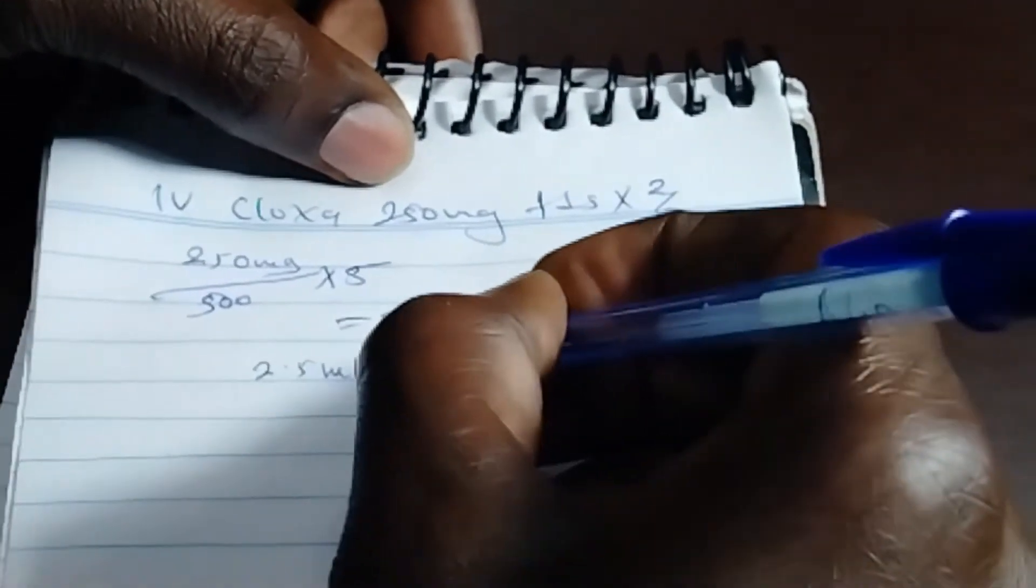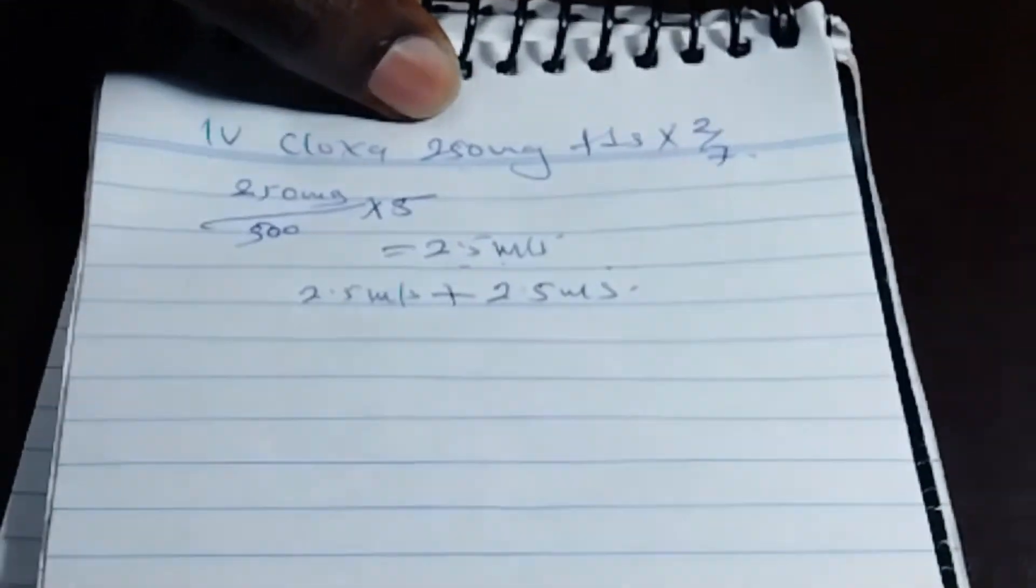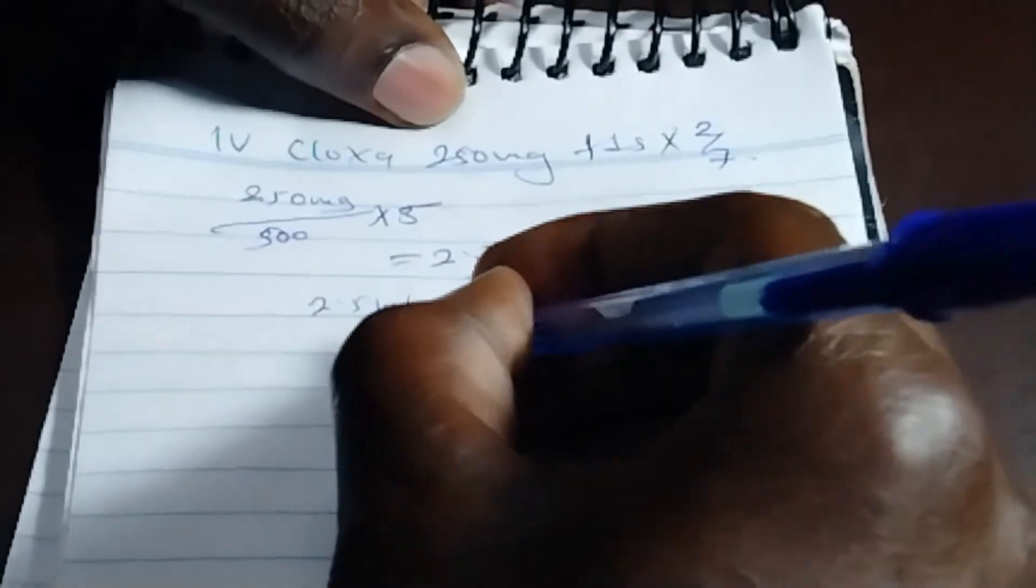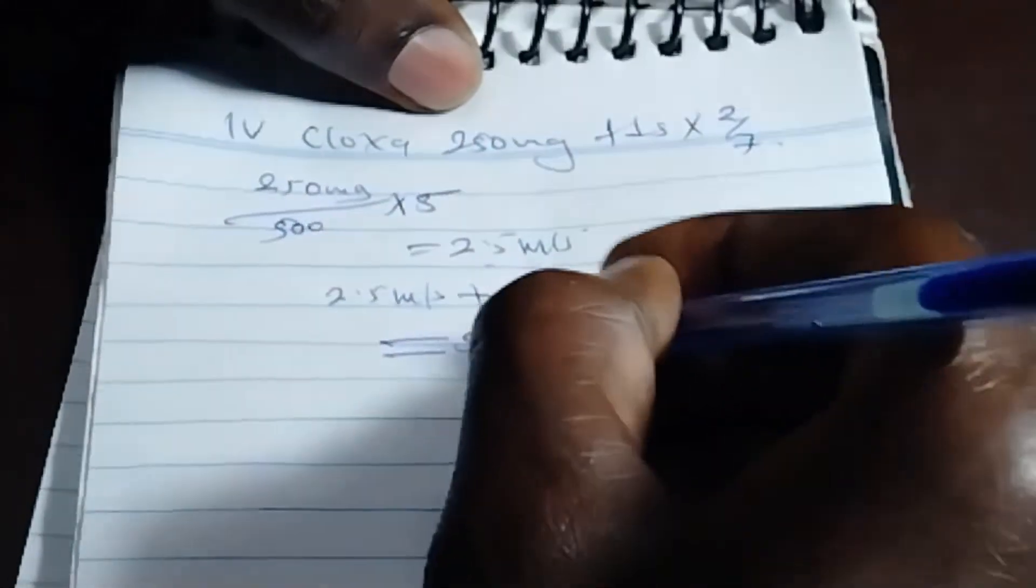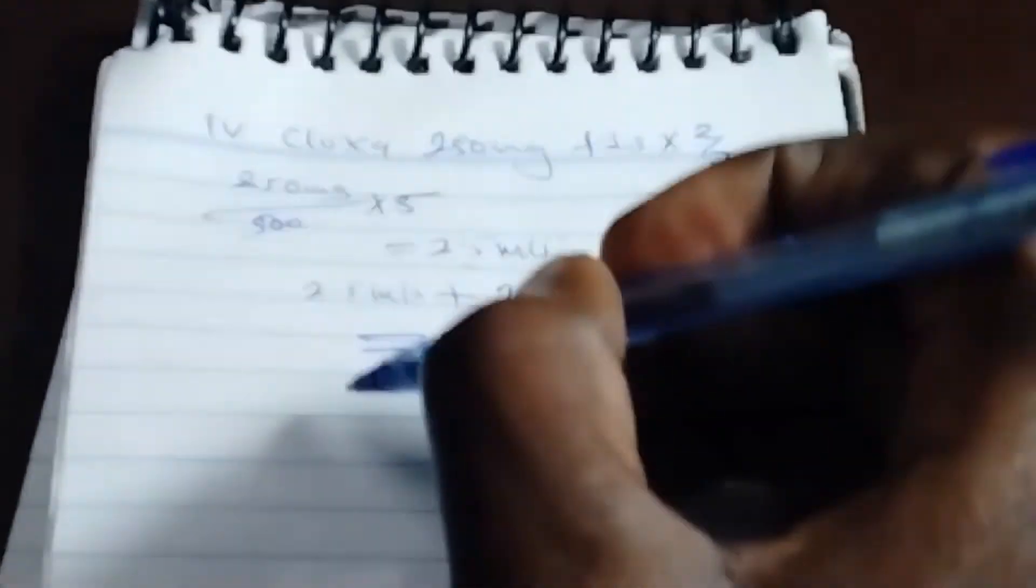So we are going to aspirate these 2.5 mils, plus another 2.5 mils. So we are going to give that 5 mils. This is what we are going to give to the child.